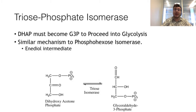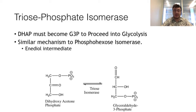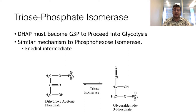The fifth step converts dihydroxyacetone phosphate (DHAP) into glyceraldehyde-3-phosphate so that the payoff phase of glycolysis can occur twice per glucose. Only G3P can proceed through the rest of glycolysis. This is the last step of the preparatory phase. Only the atoms converted into DHAP via the previous step undergo this reaction. This mechanism is similar to phosphohexose isomerase for interconverting ketone and aldehyde groups, using an enediol intermediate.